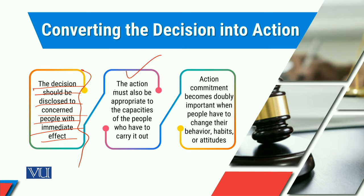The second important thing is that the action must also be appropriate to the capacities of the people who have to carry it out. We need to clearly understand people's competencies and at what level they are operating, and accordingly the delegation of authority has to be done. Under that delegation of authority, people will resume their empowerment and then they are there to take the action and make the decisions.